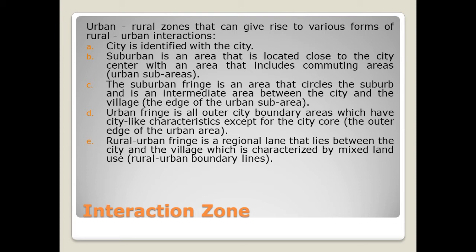Continuing the interaction zones: (c) Sub-urban is an intermediate area between the city and the village. (d) Urban fringe refers to outer city border areas which have city-like characteristics, except for the city core. (e) Rural-urban fringe is a boundary line between the city and the village, characterized by mixed land use.